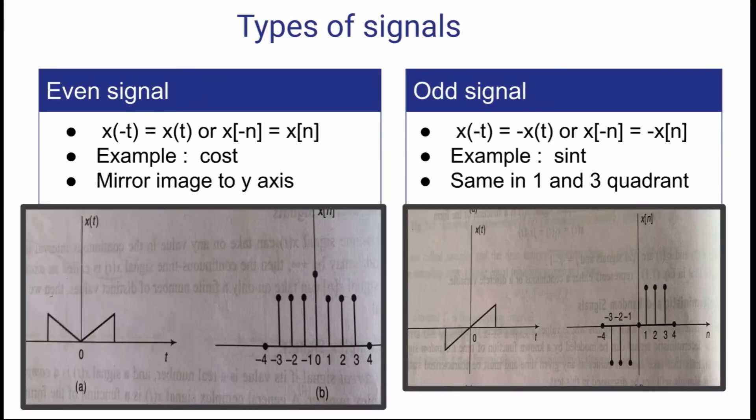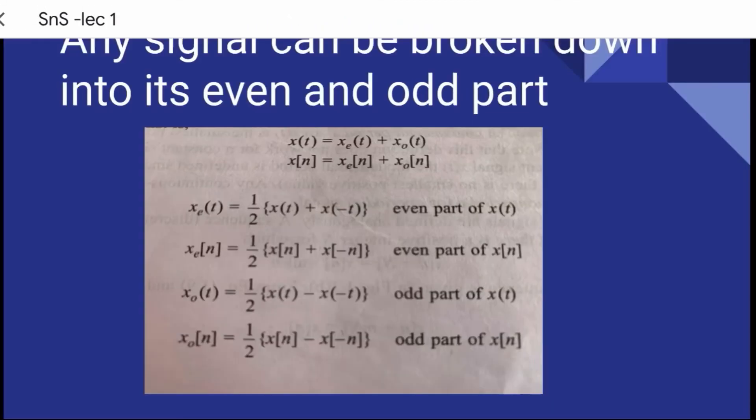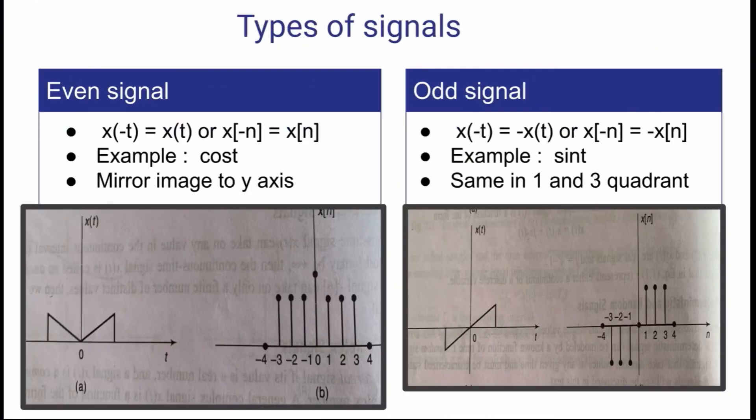Next one is your even and odd signals. Even and odd signals, what is in even and odd signals? It is defined by this equation. Say if x(-t) is equivalent to your x(t), and if your x(-n) is equivalent to your x[n], then it is an even signal. For example, your cos t. And you can say it is a mirror image of y axis. You can see in the example. And another is your odd signal. x(-t) is equivalent to minus of x(t), and x(-n) is equivalent to minus of x[n]. For example, we can take sine t. So you can see that it is same in your first and second quadrant for even signal, while your odd signal, even signal and your odd signal are same in first and third quadrant.